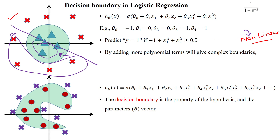For non-linear data, the hypothesis function has features with different degrees. For example, x1 has degree 1 here, and degree 2 here. So the hypothesis function has polynomial features. If there are polynomial features, our dataset is in non-linear format, and in this case we will get a decision boundary other than a straight line.